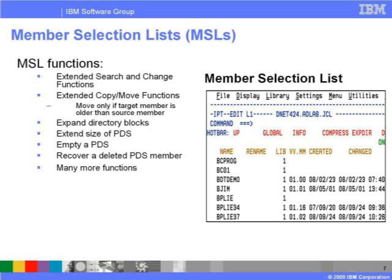Global Find and Change commands provide extended search and modify functions without leaving the member selection list. Copy and Move functions honor the list of members you have identified, and also provide extended functions such as only copying or moving source members which have been updated after the target members. If the PDS or PDSE directory becomes full, the PDS is expanded automatically, provided you confirm the PDS expansion request. You can also empty a PDS or recover a deleted PDS member from the MSL. As with object lists, hot bars are provided for commonly used commands, shown in red in the member selection list panel — these are point-and-shoot commands invoked by placing your cursor on the entry and pressing Enter.